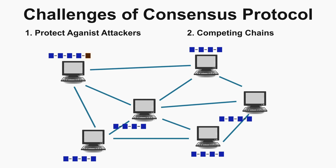The second challenge of consensus protocol is competing chains. In a large distributed network like blockchain, there is a probability of mining multiple new blocks at the same time by different miners. This creates a conflict when distributing the newly mined block to the network — the nodes will be confused which block to add first and which to add later. Consensus protocol must be able to solve this problem and decide which block should be added first.